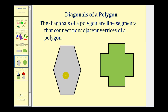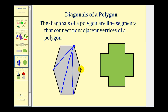Looking at this polygon here, if we select one vertex, the diagonals from this vertex would be all the segments connecting it with any non-adjacent vertex. Adjacent vertices are the vertices that are next to this vertex — so this would be an adjacent vertex, and so would this one. So the diagonals from this point would be this segment here, this segment here, and this segment here. If I wanted to sketch the diagonals from this vertex, I would do the same. This is not a diagonal — this would be a side. So I connect this vertex with this non-adjacent vertex, this vertex with this non-adjacent vertex, and this vertex with this non-adjacent vertex.